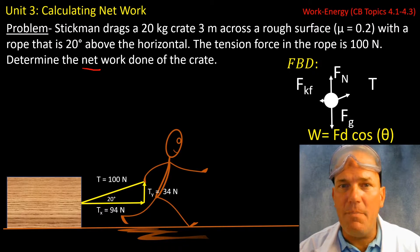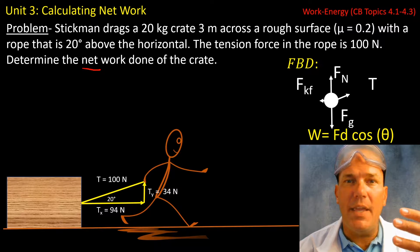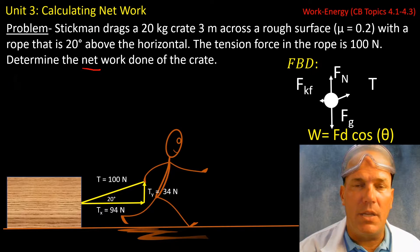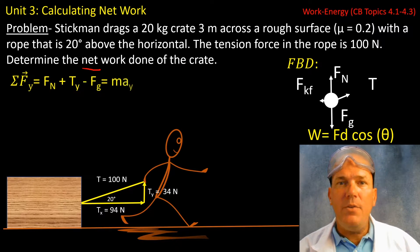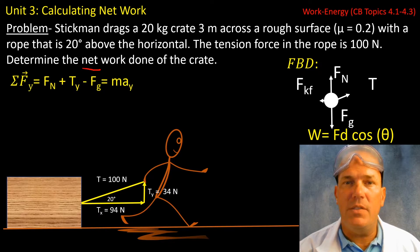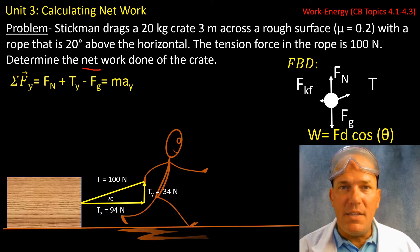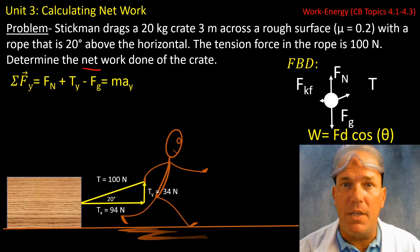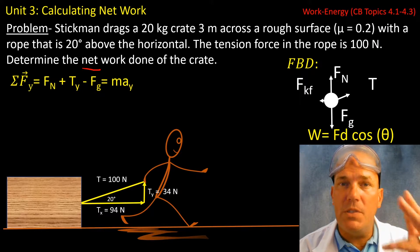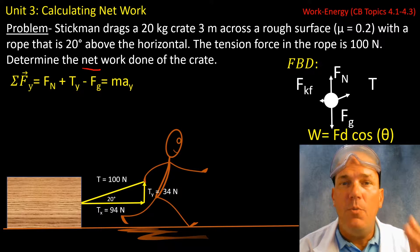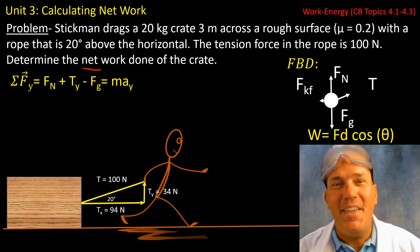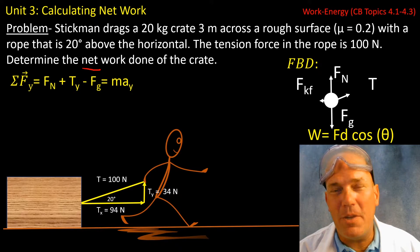The next step would be to sum the forces in both the x and y direction. Now in the y direction, let's call up positive and down negative for our coordinate system. Immediately, you should notice there are three forces acting vertically: two upward forces and one downward force. We set those equal to mass times acceleration vertical. And of course, the object's not accelerating vertically.